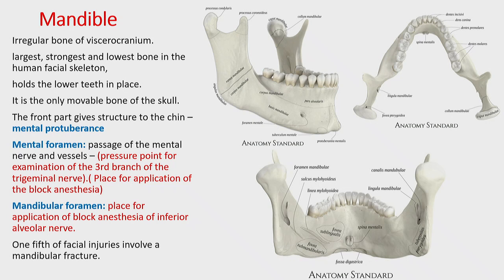The symphysis menti (mental symphysis) fuses by age one to two years — it is initially a fibrous connection, then becomes ossified, resulting in a single mandible. The mandible is the most largest, strongest, and most inferior bone of the splanchnocranium, and is the first bone involved in facial injury. Mandibular fractures account for one-fifth of all facial injuries. The alveolar process of the mandible has dental alveoli, interalveolar (interdental) septa, and interradicular septa for multi-rooted teeth.